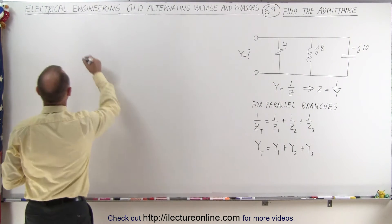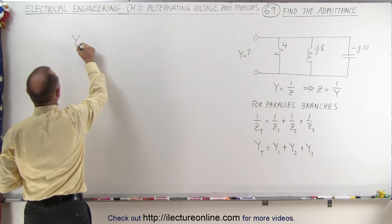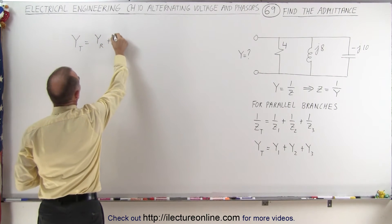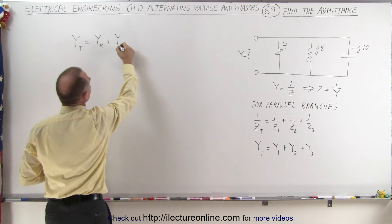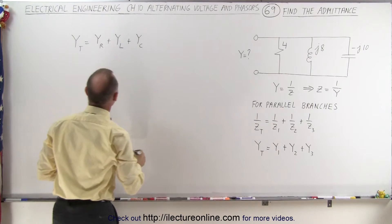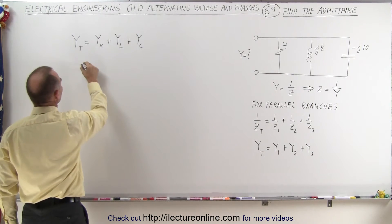So first, we're going to find the total admittance. Admittance total is equal to admittance across the resistor plus the admittance across the inductor plus the admittance across the capacitor or for the capacitor. And so that's equal to,